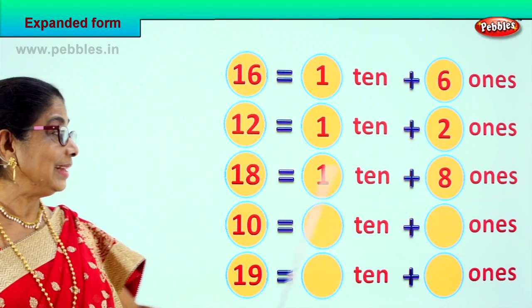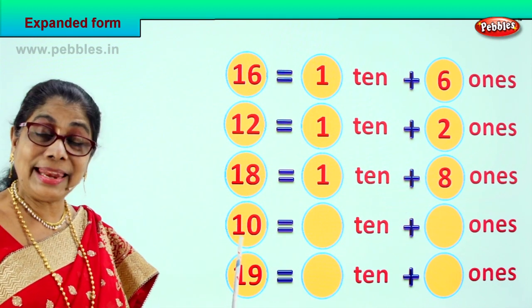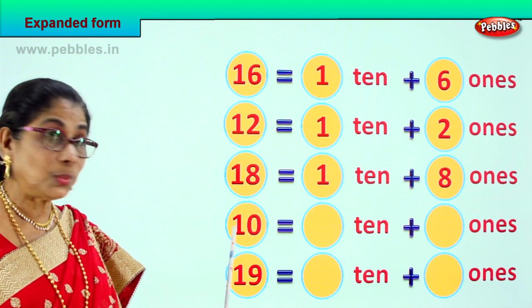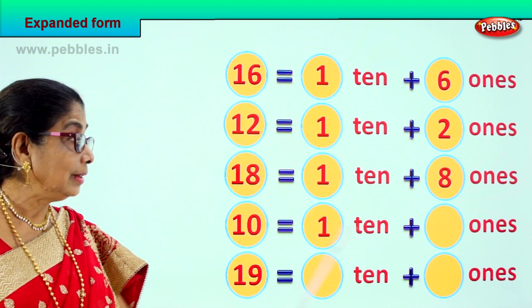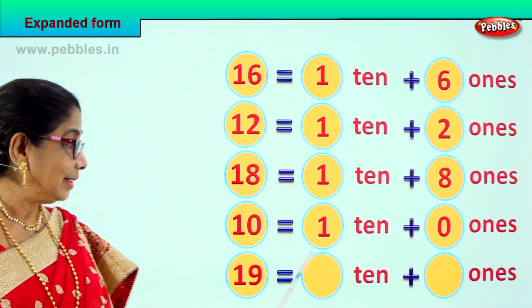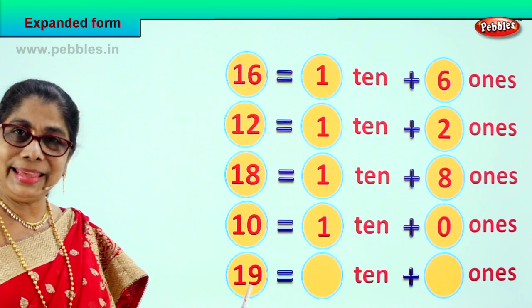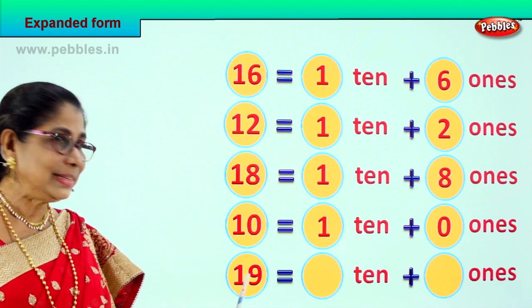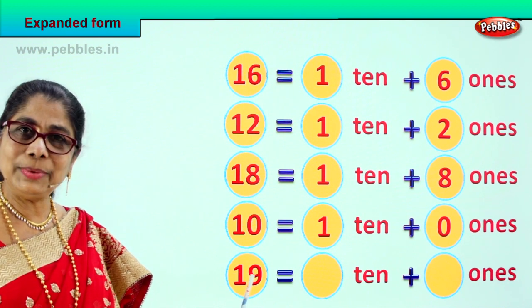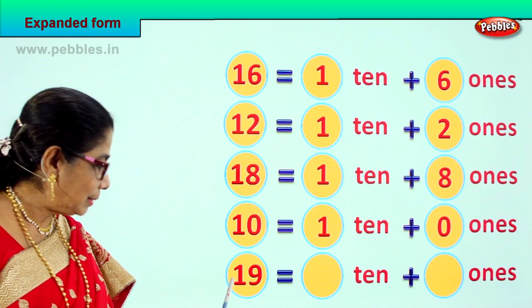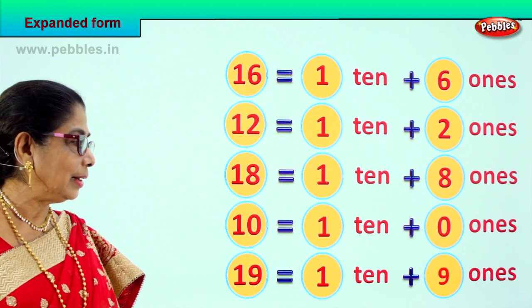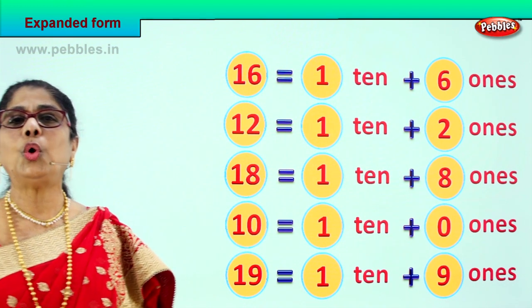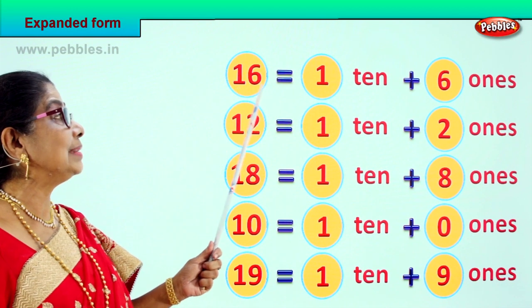Good. Next number, 10. How many tens? How many ones? There is 1 ten and 0 ones. Very good. And here, look — 19.